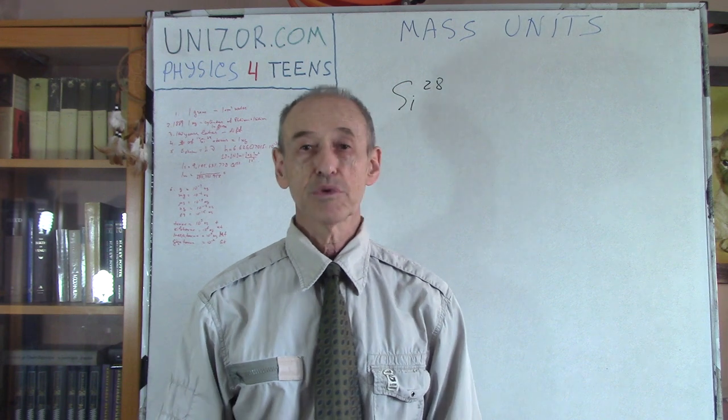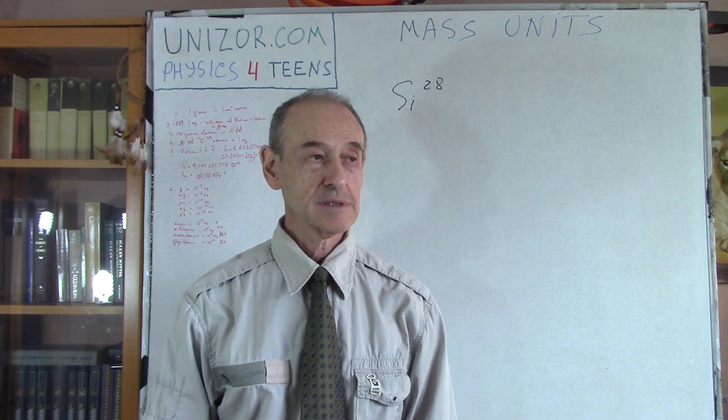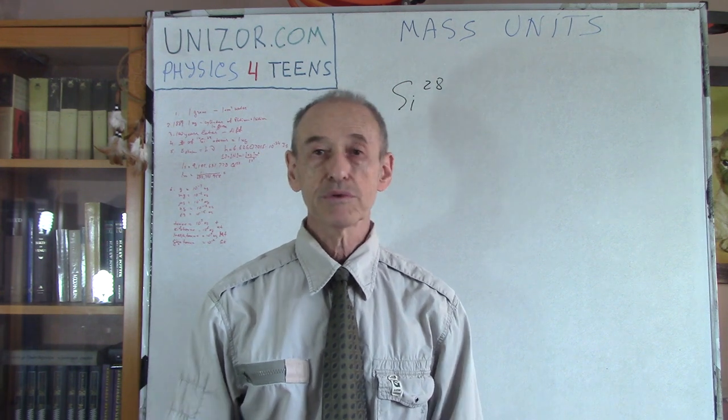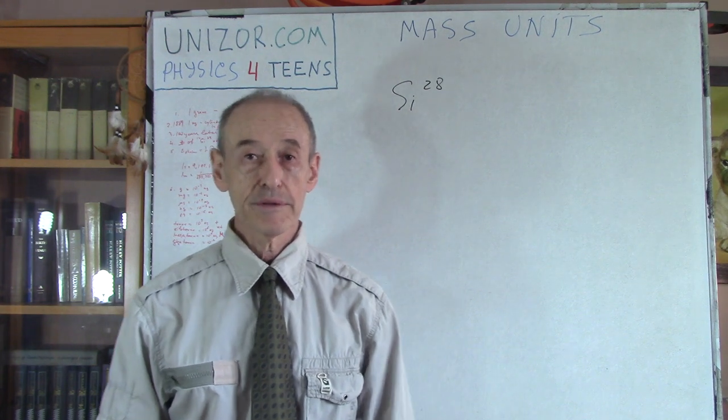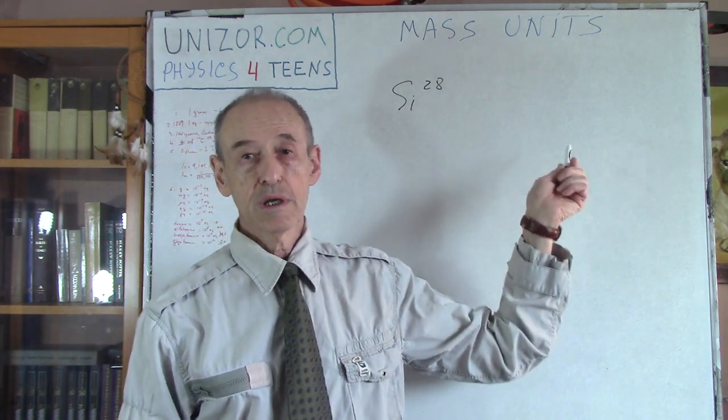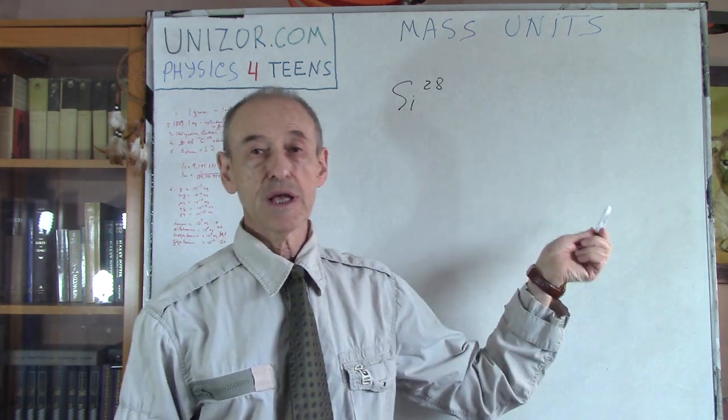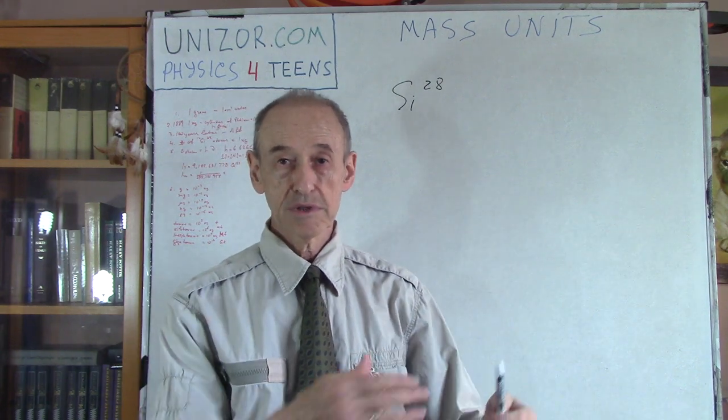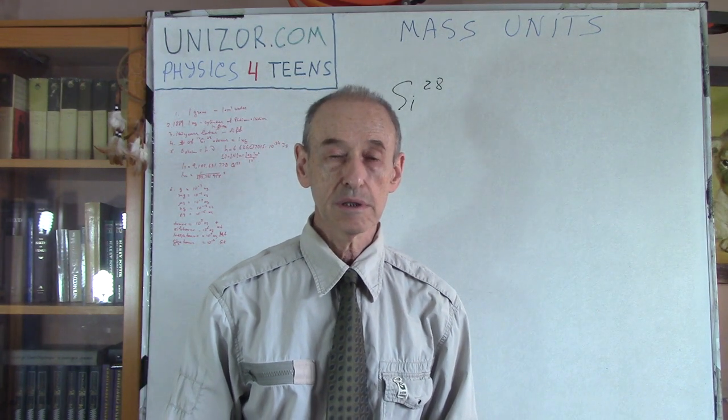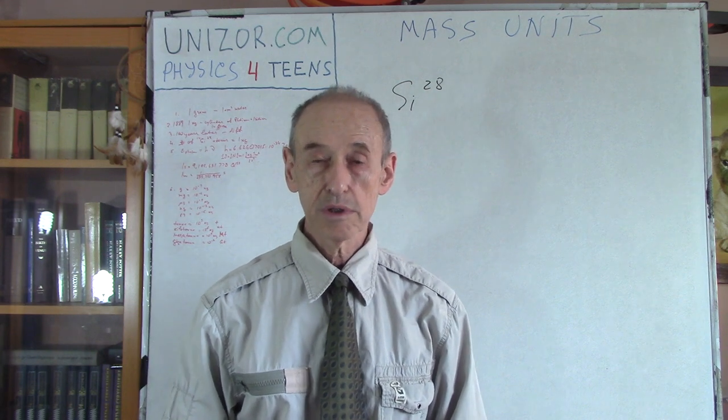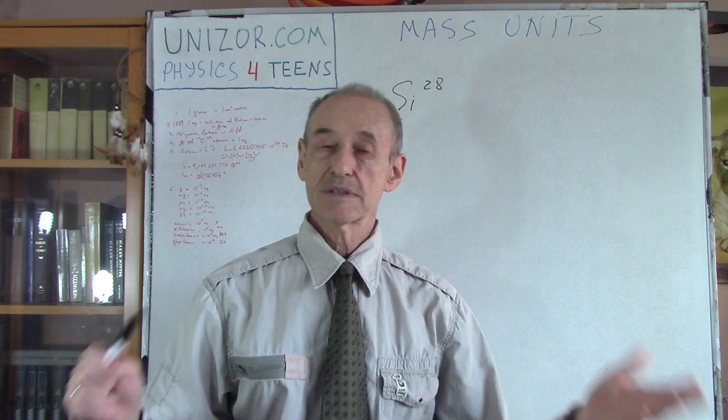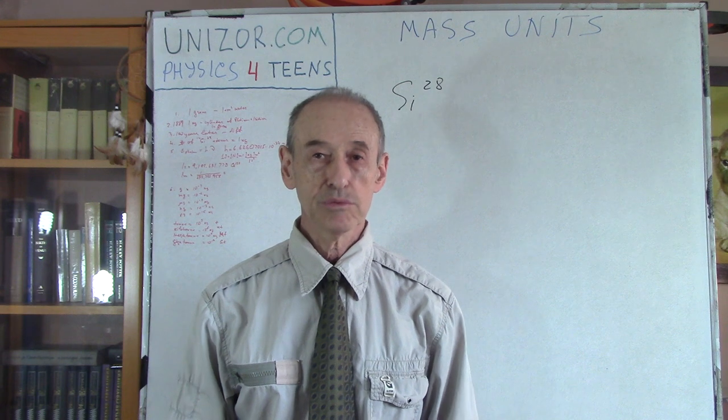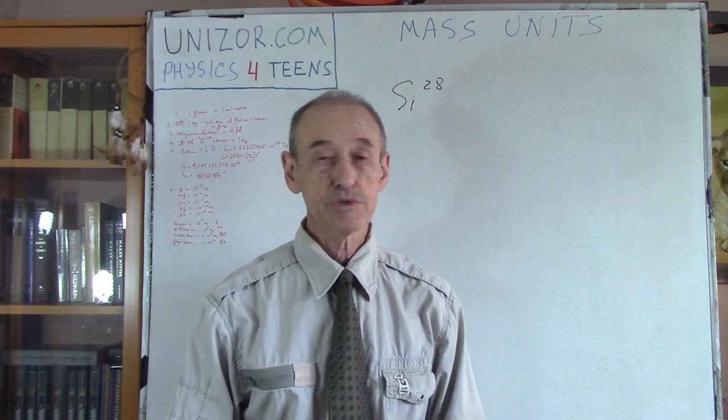Quite frankly, for me, personally, that would be a very natural understanding of how we define the kilogram. For some reason that was rejected by physicists. Maybe one of the reasons is that there are other isotopes of silicon, silicon-29 and silicon-30, with different number of neutrons in the nucleus. And maybe it's difficult to separate. I don't really know the reason. It was rejected.